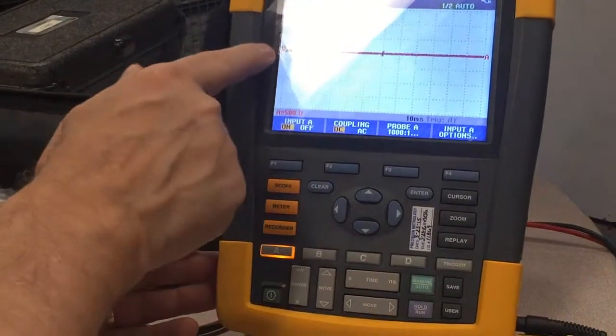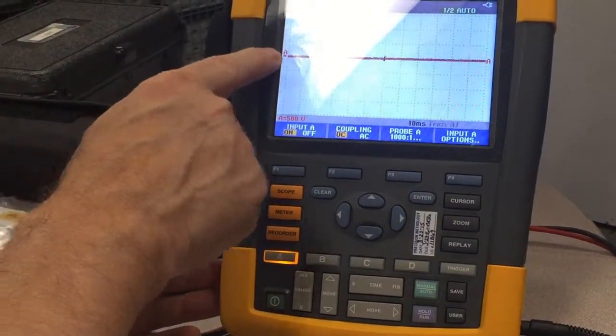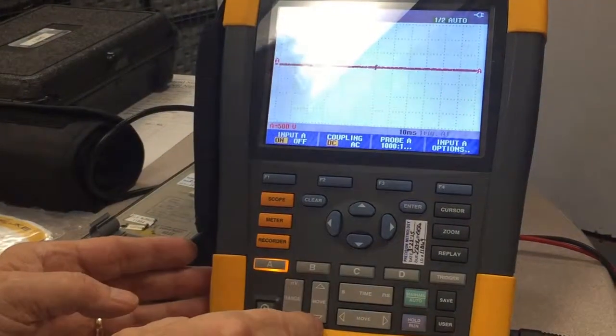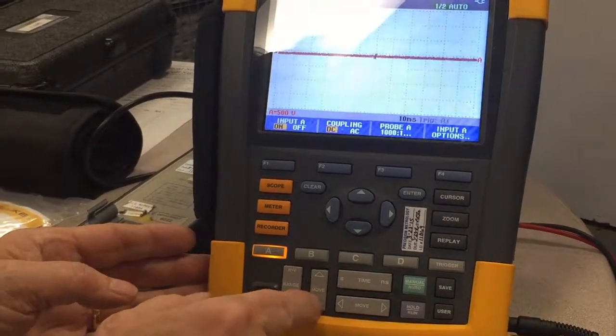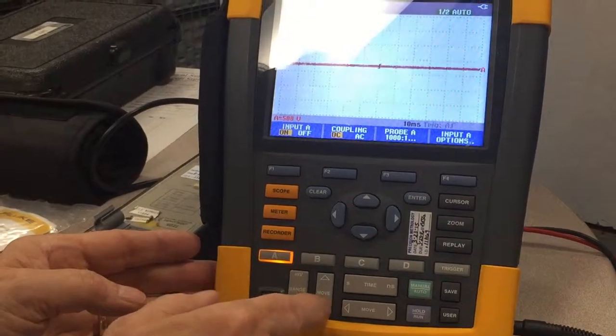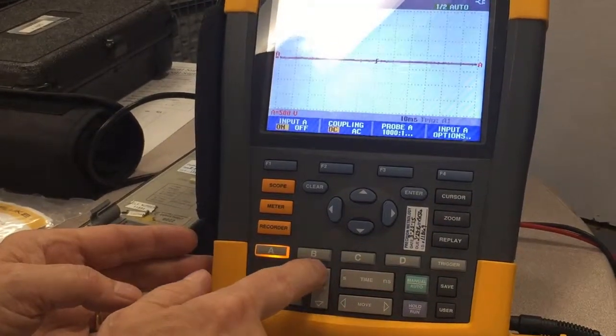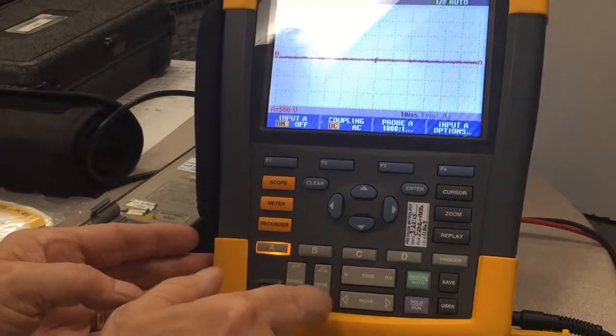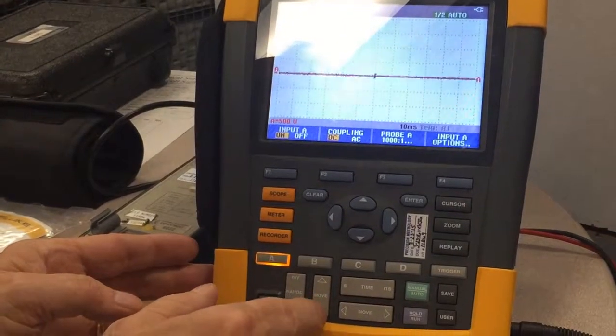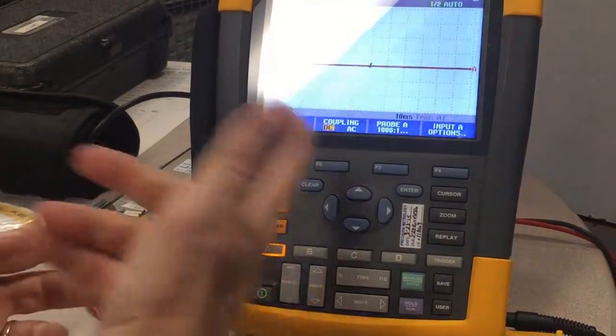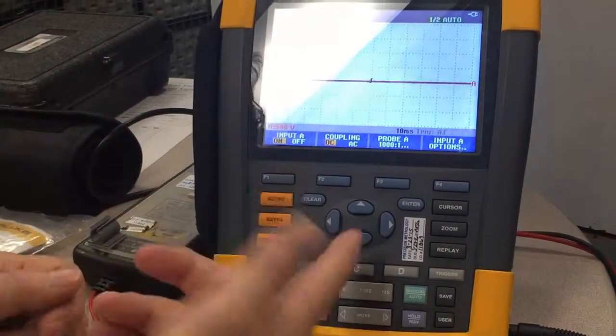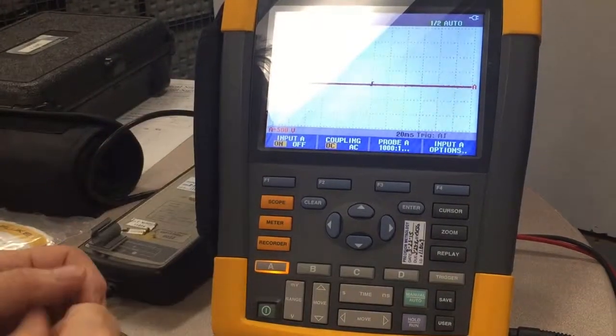And then the next thing we want to do is make sure our zero, where A is, is right in the middle. So we'll move that down to the middle of the screen. We'll move it to one of the graticules that's flat. Okay, so now we have our attenuation set. We have our volts per division set.